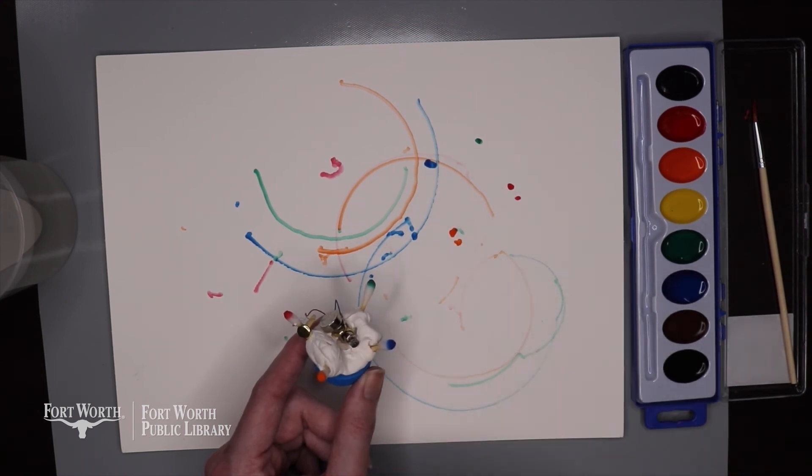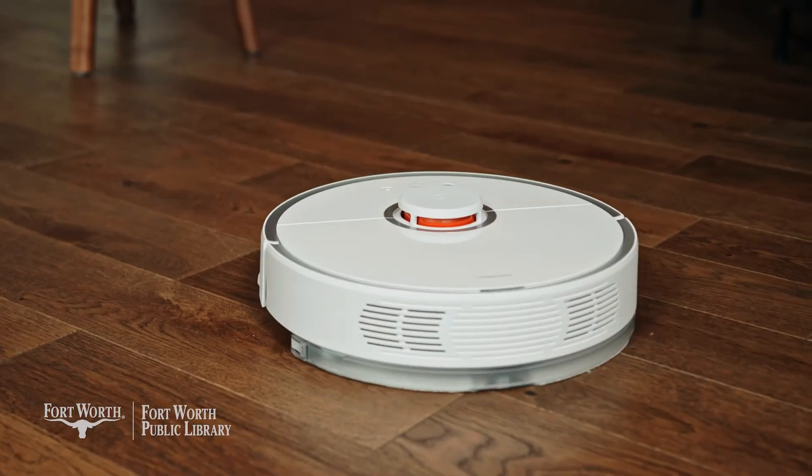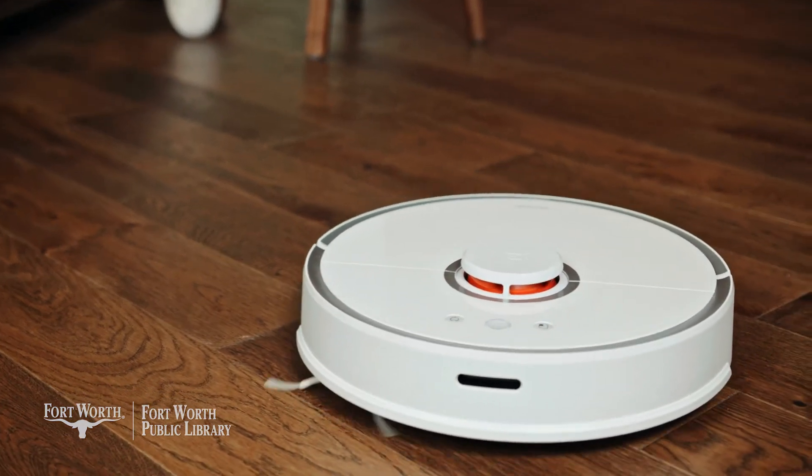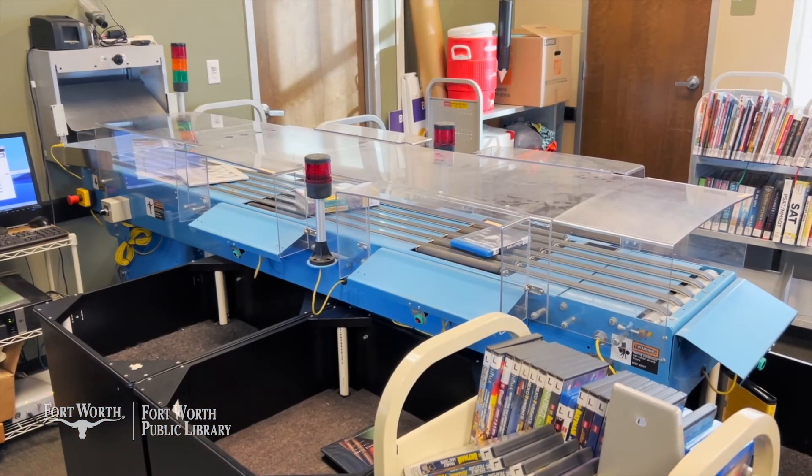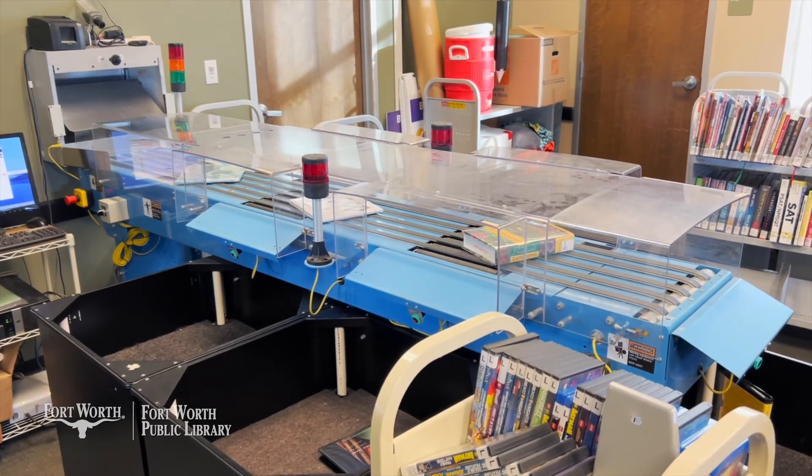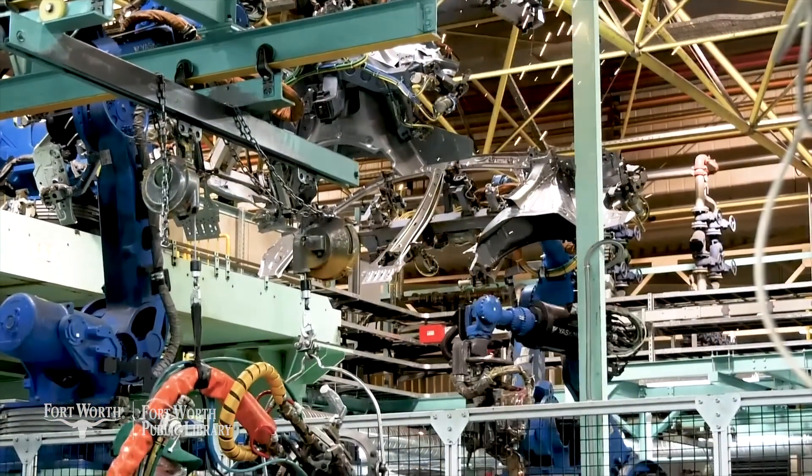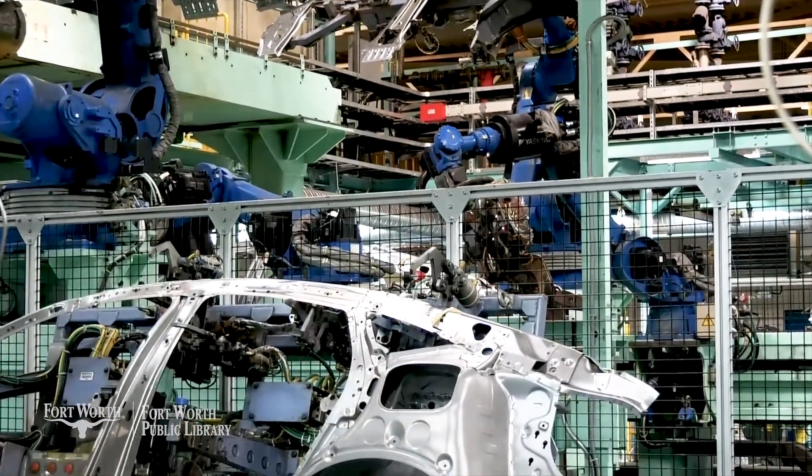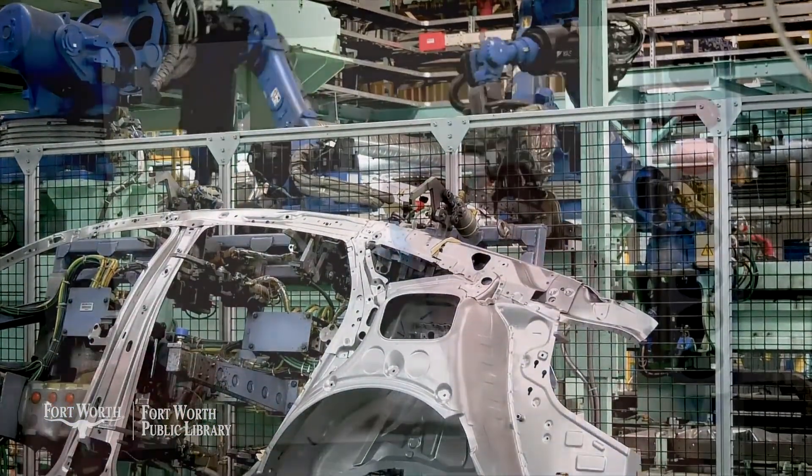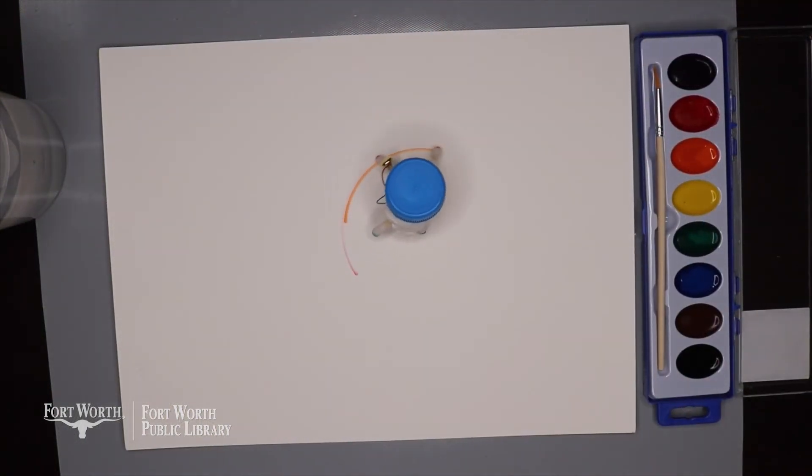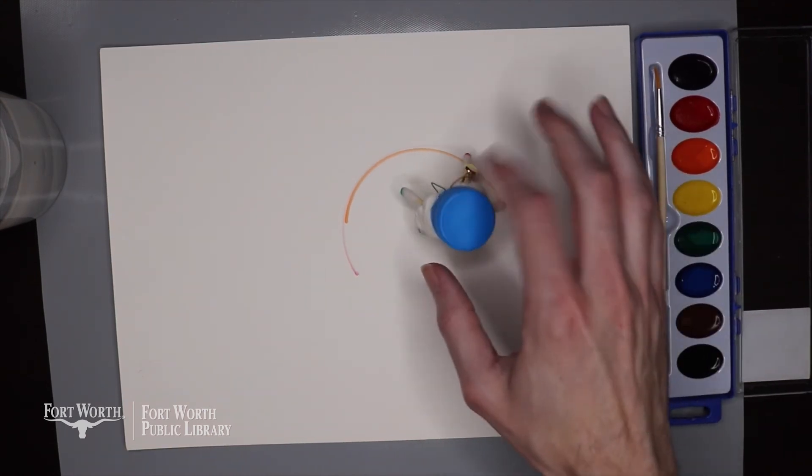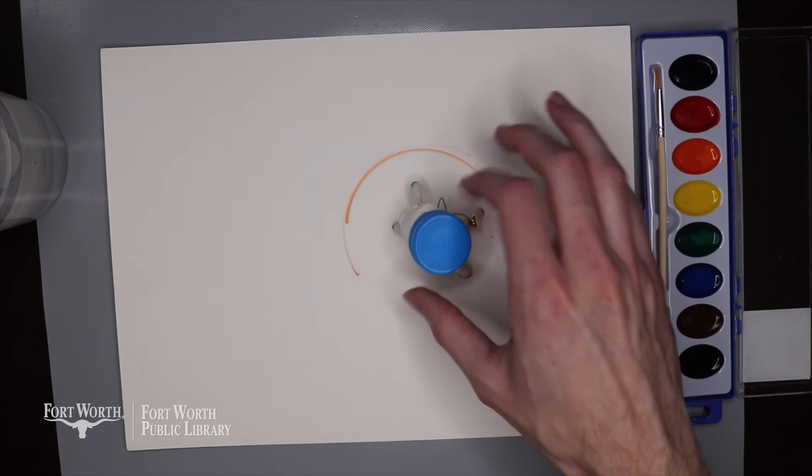We interact with robots all the time and we don't even think about it. Do you have a robot vacuum at home? Did you know some of the libraries have a robot that helps return and sort the books? Some robots are very complex and have many tasks that they can complete. Other robots are simple and only complete one or two tasks. The robot we made today is a very simple robot. It uses a simple circuit and only has one task: to move around the page spreading paint across the watercolor paper. Let's take a look at the circuit.